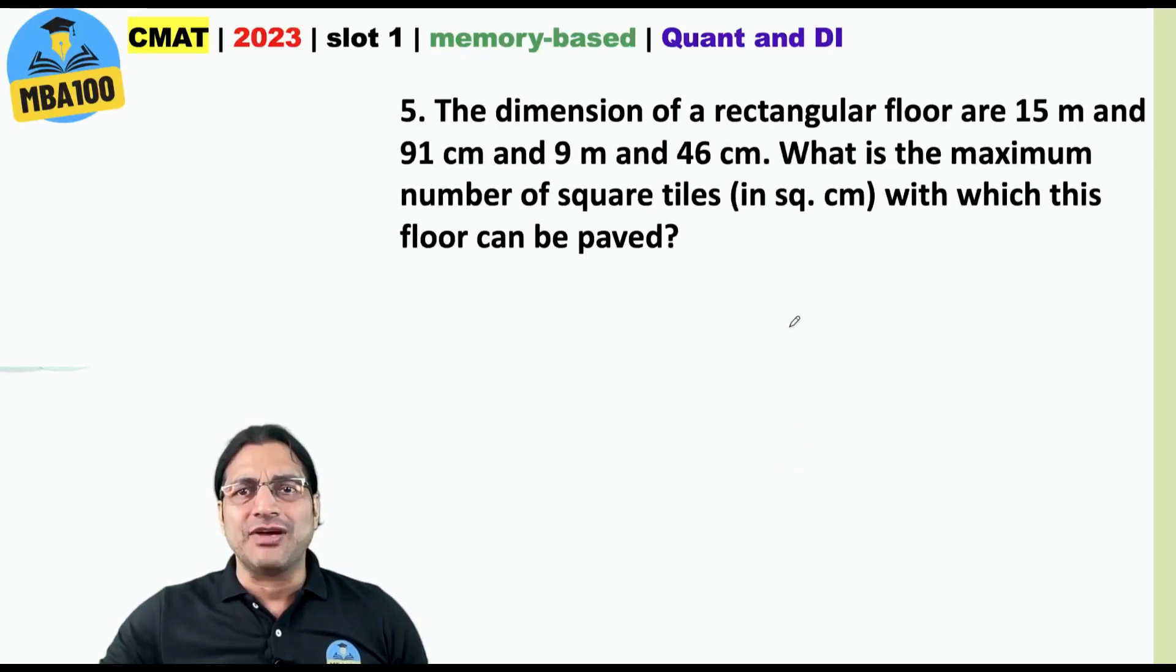The dimension of a rectangle of floor. The answer is 814. And how did we get 814? 37 into 22.